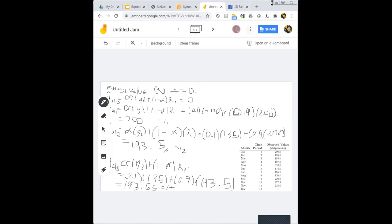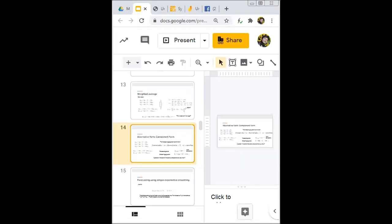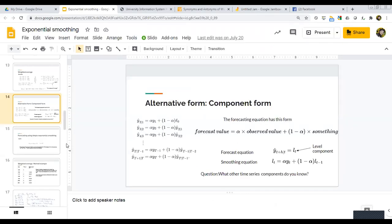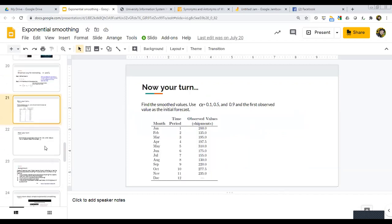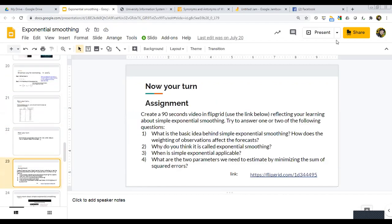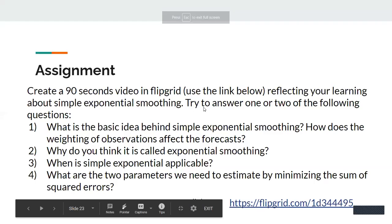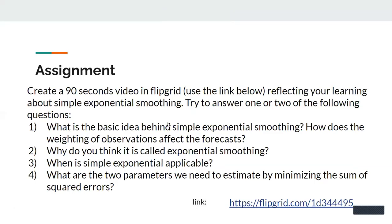Next meeting, as your assignment, can you see my screen? Yes sir. So as your assignment, go to Flipgrid and then create a 90 seconds video. It doesn't need to be 90 seconds exactly. It could be 90 seconds or less, but don't make it more than 90 seconds.